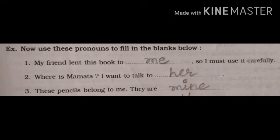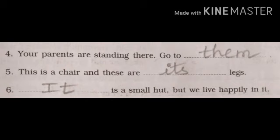Number three: these pencils belong to me. They are dash. Here the pronoun 'me' is given, so with 'me' we are using 'mine'. So: these pencils belong to me, they are mine. Number four: your parents are standing there, go to them. They tell us your parents are waiting or standing there — go to them. Aap unke paas jau. So here the answer is 'them'.